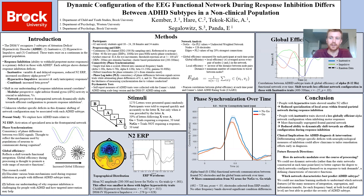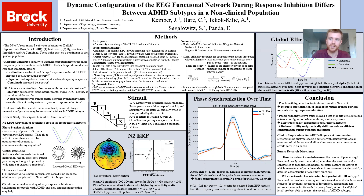From these networks, we looked at global efficiency, which is a graph theory measure of the organization. It is essentially the local efficiency averaged across every pair of nodes in the network, where local efficiency is the inverse of the distance between pairs of nodes, and distance is simply the number of connections it takes to get from one node to the other. We take the inverse so that nodes with short connections are highly efficient, and vice versa.